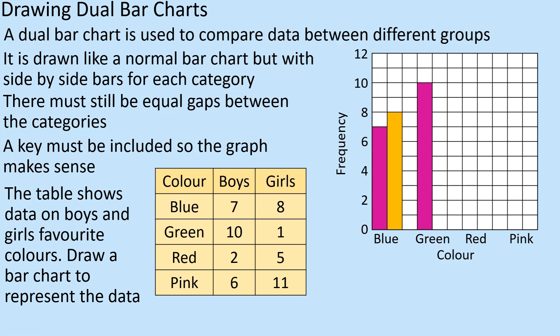So let's put the next values in. For green we have ten and one. Then leave a gap. For red we have two and five. And finally for pink we have six and eleven. And so we now have a complete dual bar chart.